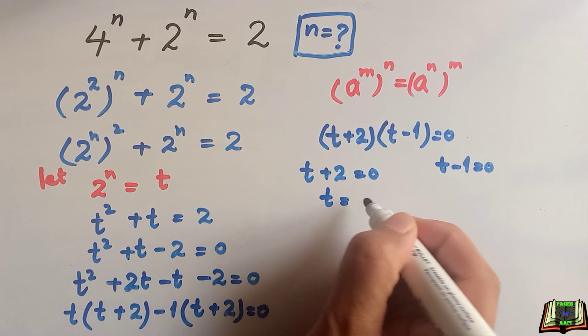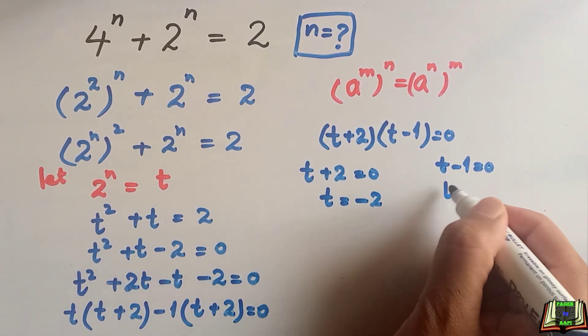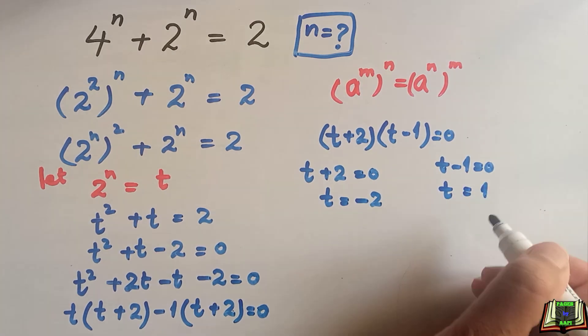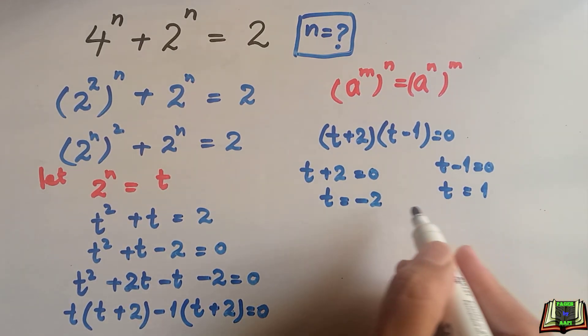From here we get the value of t by taking it to the right hand side, it will become negative, and from here we got another value of t is equal to 1.